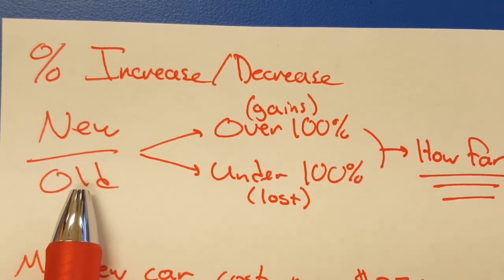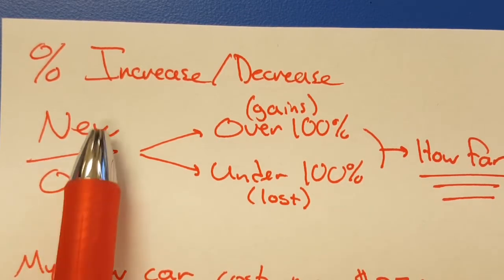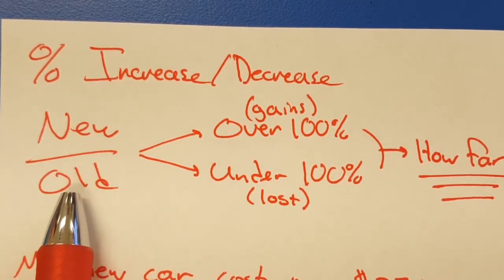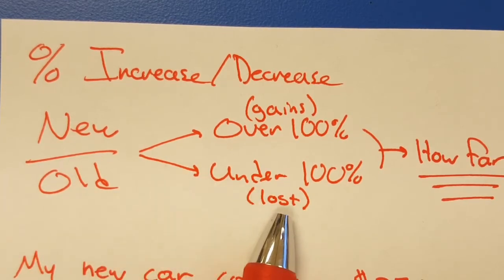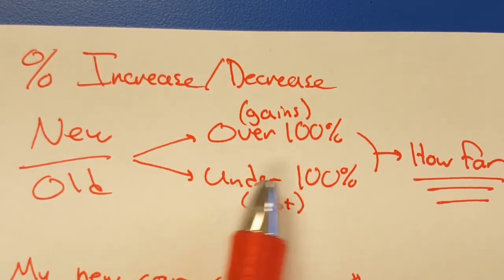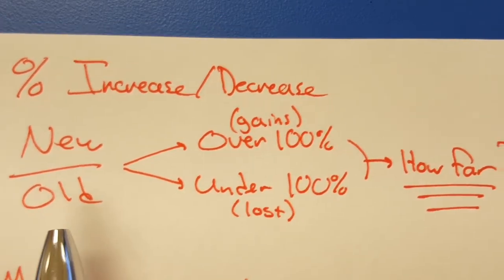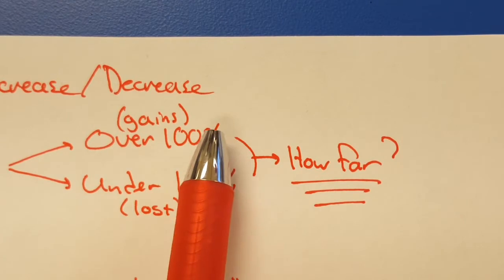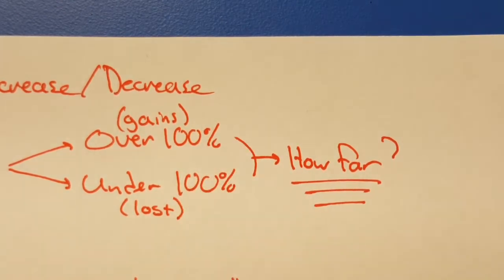When the old number is bigger and you have a smaller number on top, you lost something. The new number is smaller, the old one's bigger, that means you lost something which means you're going to be under 100%. So when you're over 100% or if you're under 100%, the actual answer is this: How far over or how far under 100% are you? So here's what we do.